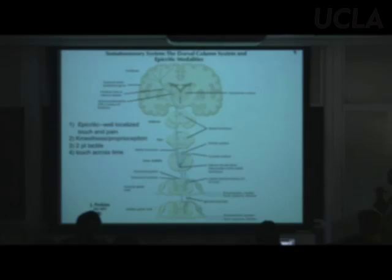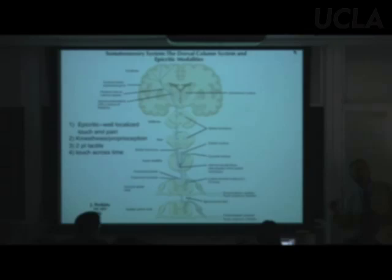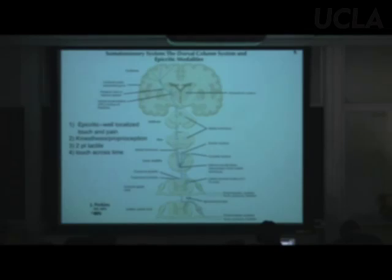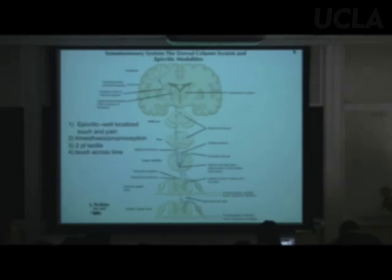Another sensation specific to this system is kinesthesis and proprioception — where your body is in space and how it's moving. Also specific to this system is two-point tactile discrimination — how close two stimuli can get before they feel like one. And lastly, touch across time.